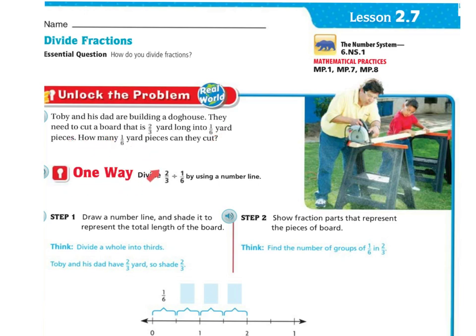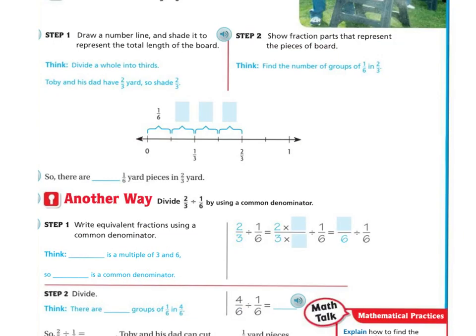Well one way is you can divide two thirds divided by one sixth using the number line. Draw a number line and shade it to represent the total length of the board. So divide a whole into thirds. Toby and his dad have two thirds of a yard, so shade two thirds. So I'm going to divide these into thirds, so there's one third, two thirds.